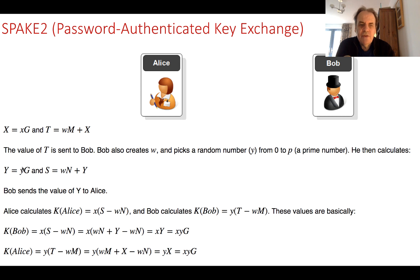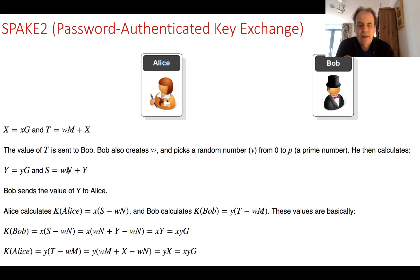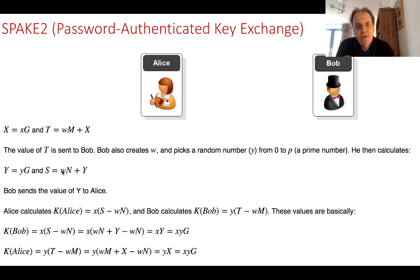Bob then generates his random number and uses a point on the elliptic curve to produce another point Y. He then calculates S equal to w times N plus Y, where N is another fixed point and w is the password converted into an integer value. It is not possible, even though Eve is listening, to determine what the value of the password actually is.